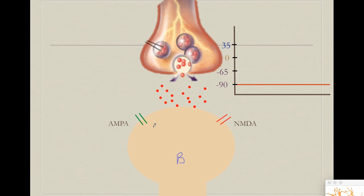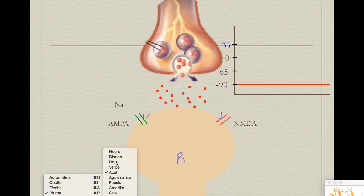How does glutamate activate neuron B? The most important part is the glutamate receptors. We're going to review mainly the two main ionotropic receptors. We have here a little protein that responds to glutamate, and once glutamate attaches to this protein it opens up a channel that allows for the free flow of ions. The first receptor activated upon glutamate release is called AMPA.